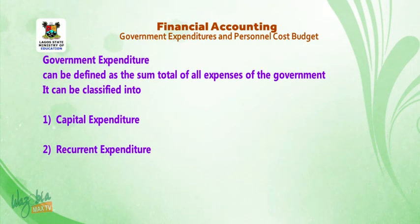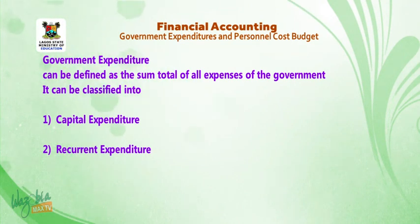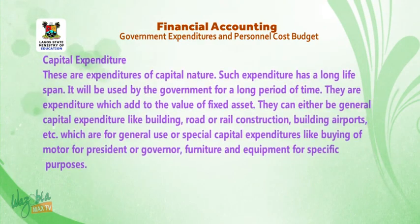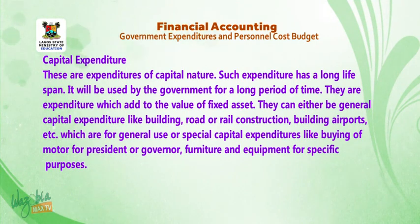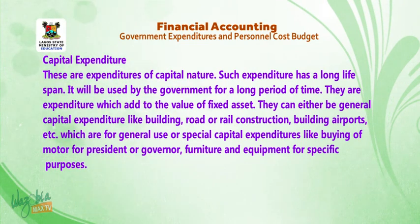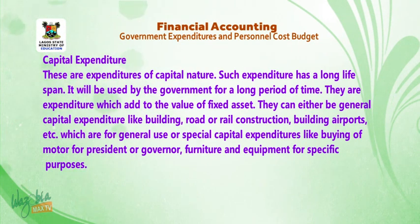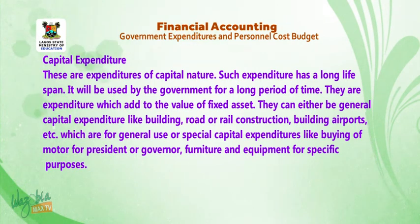Government expenditure can be defined as the sum total of all expenses of the government. It can be classified into: 1. Capital expenditure and 2. Recurrent expenditure. Capital expenditures are of capital nature, have a long lifespan, and add to the value of fixed assets. They can be general capital expenditures like building, road or rail construction, airports, or special capital expenditures like buying a motor vehicle for the president or governor, and furniture and equipment for specific purposes.